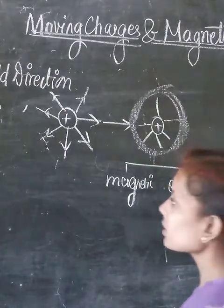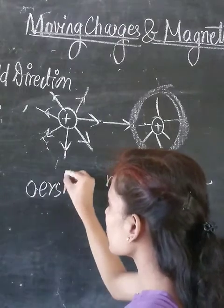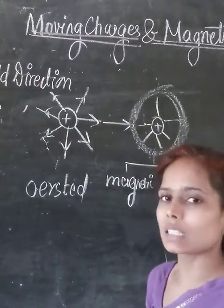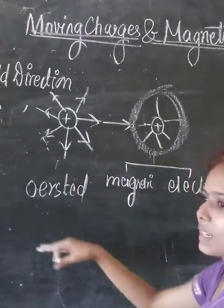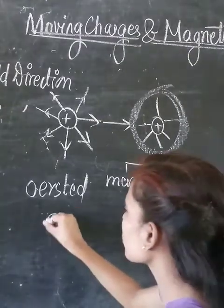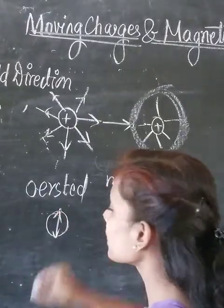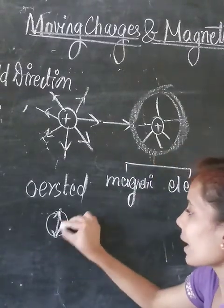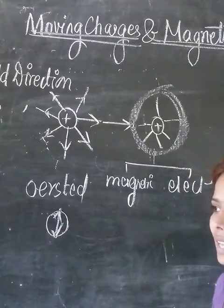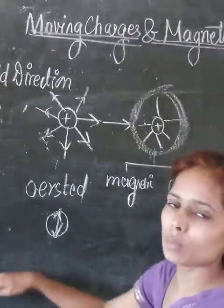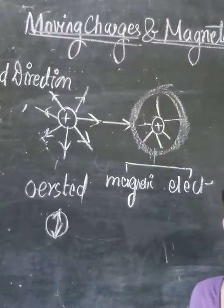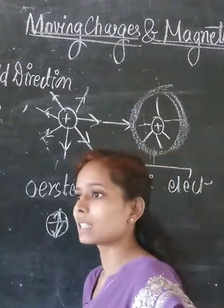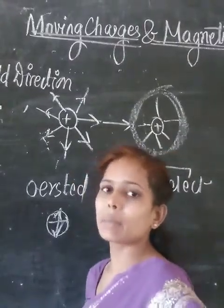We also learned about Oersted's experiment: whenever a moving charge — that is, current flowing through a conductor — is present, it produces magnetism around it. When a magnetic compass is placed near a current-carrying conductor, the needle shows deflection — towards the west when current flows from south to north, and towards the east when the current flows from north to south. This was the Oersted experiment that established the link between electricity and the magnetic field produced.